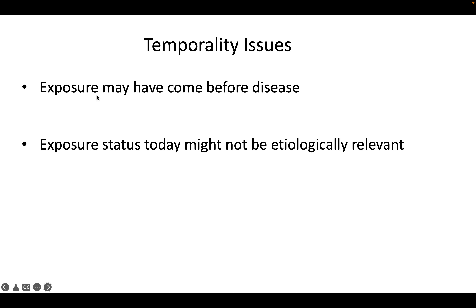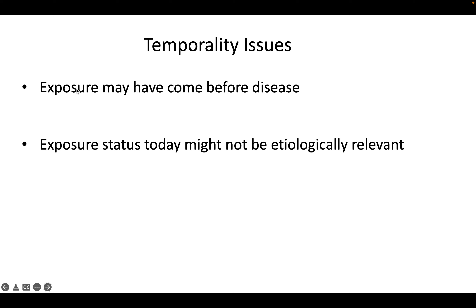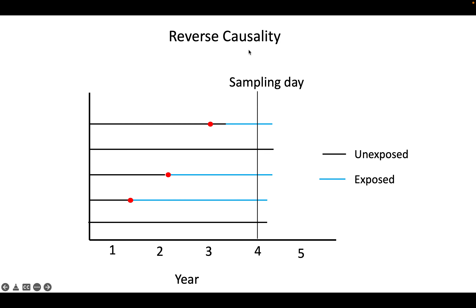Diving deeper into temporality issues: we need to figure out that the exposure comes before the disease, and we also want to make sure the exposure being measured is etiologically relevant — meaning it is relevant to the person's current disease status. Reverse causality is the idea that we want to show exposure happened first and then disease, but sometimes the disease came first and then the exposure, and in extreme cases disease actually leads to exposure.